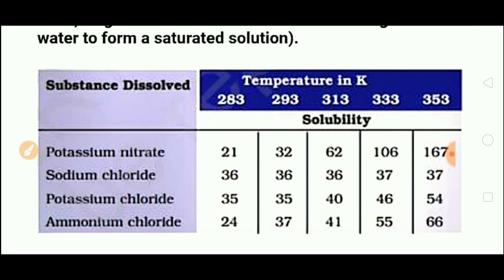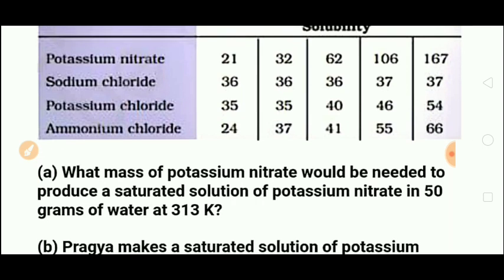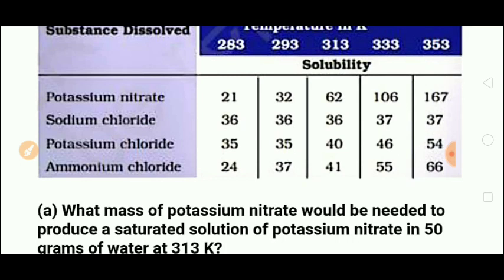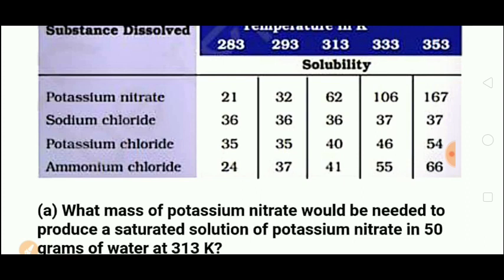First sub-question: what mass of potassium nitrate is needed to produce a saturated solution in 50 grams of water at 313 Kelvin? The solubility is checked per 100 grams. At 313K, the solubility of potassium nitrate is 62 grams per 100 grams of water. So for 50 grams of water, it will be half — that is 31 grams.